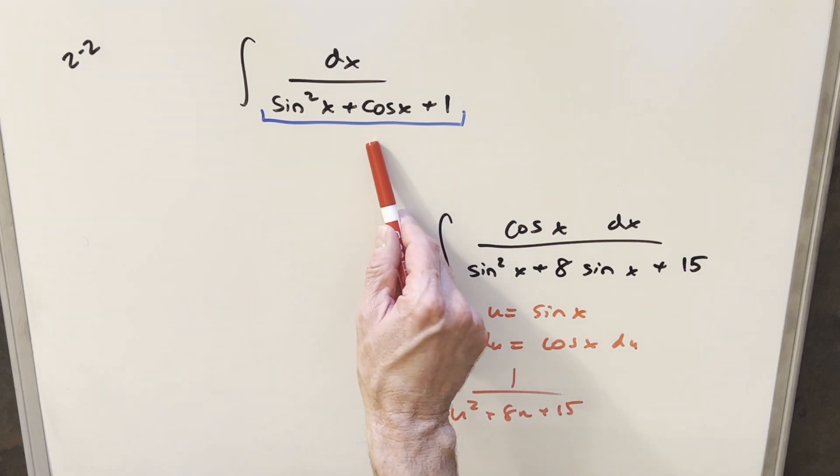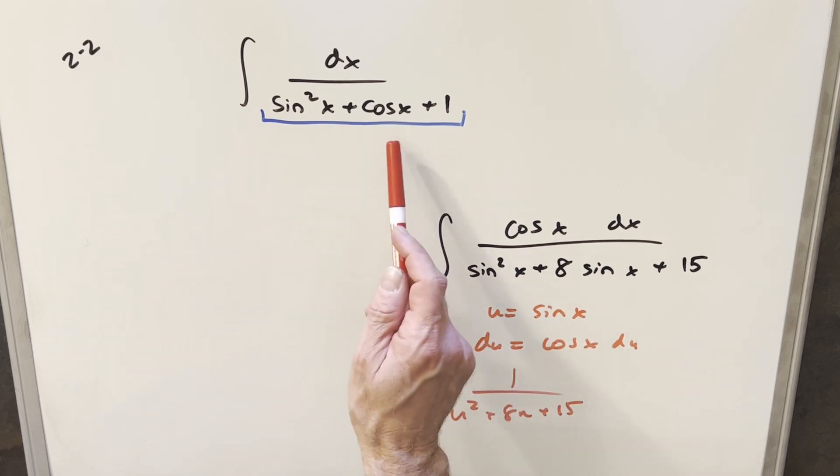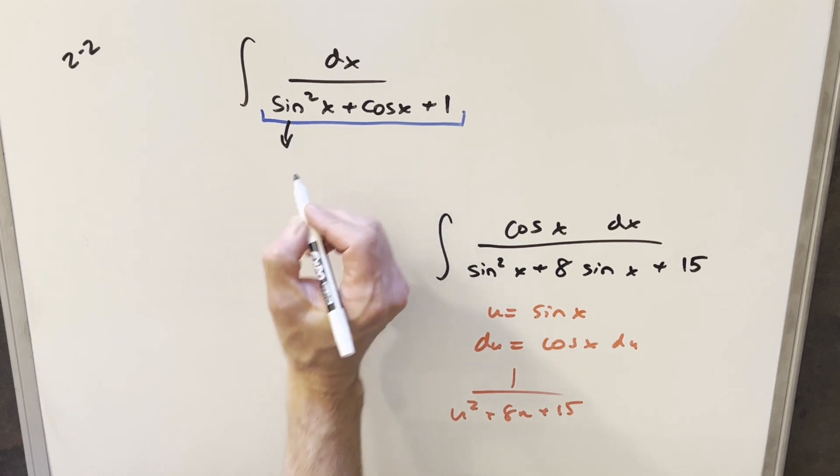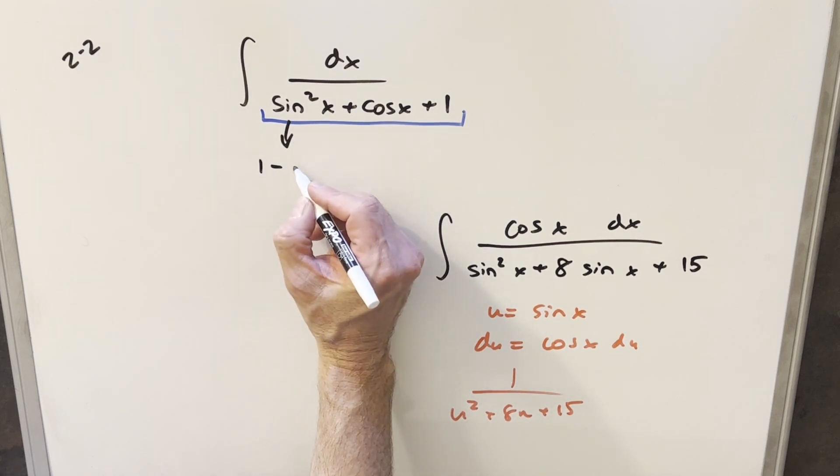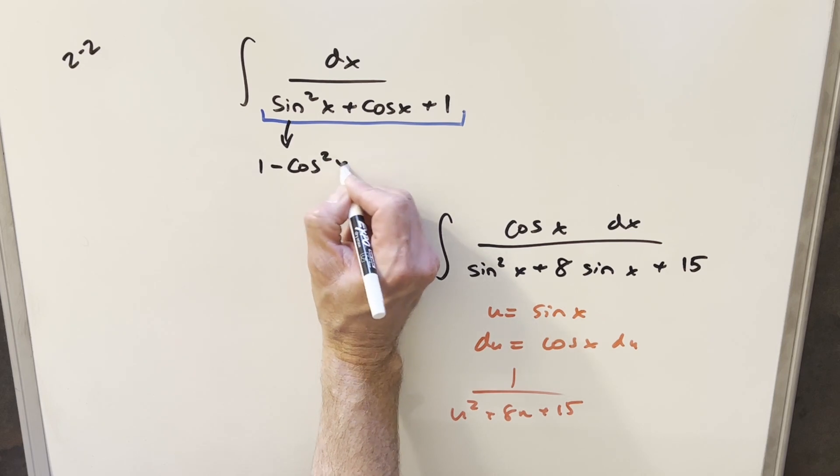The difference we have here is a few things. We've got nothing in the numerator to work with for our u substitution, that's going to be more difficult. Also, we don't have just sines, we're mixing sines and cosines. But the mixing sines and cosines is pretty easy to fix because I can just use an identity for this and write my sine squared x as 1 minus cosine squared x.